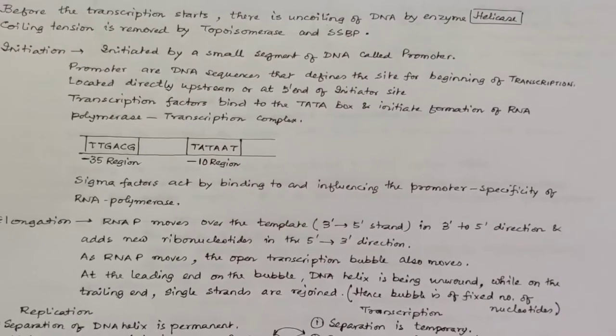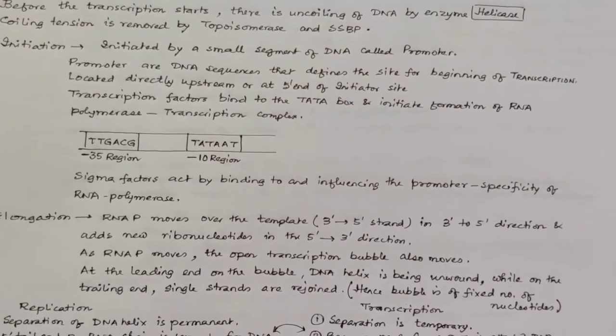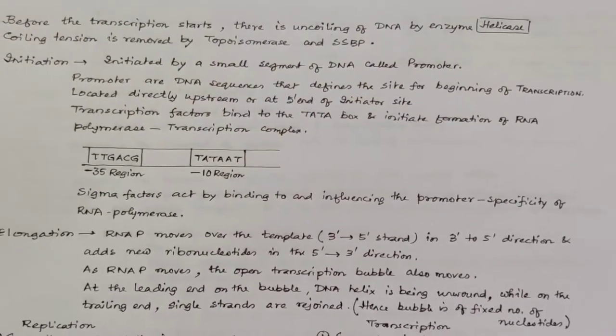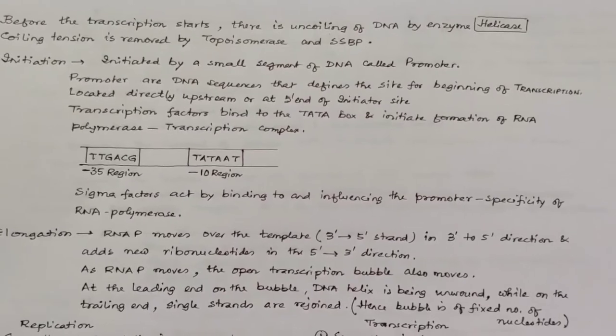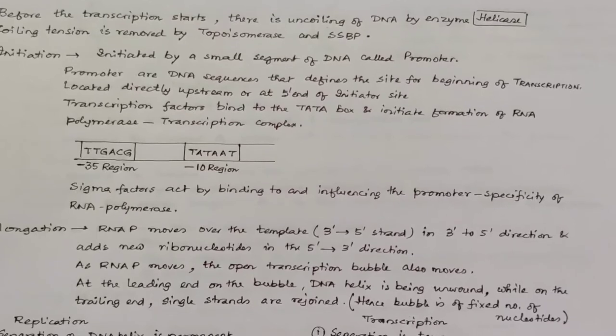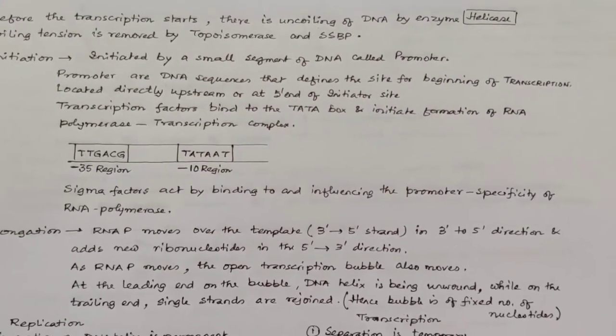This forms the RNA polymerase transcription complex, involving both of them. Now the sigma factor, which was attached to the core enzyme, acts by binding to and influencing the promoter specificity of the RNA polymerase.